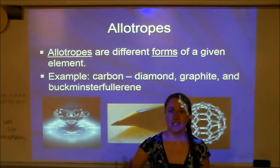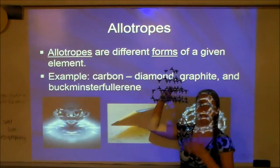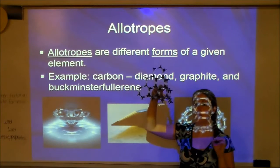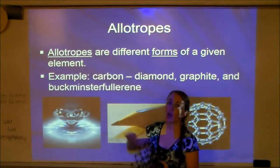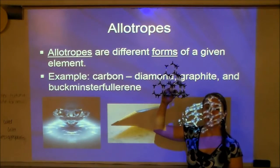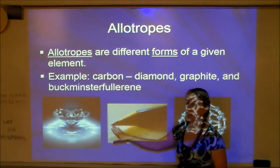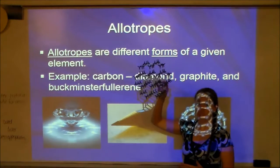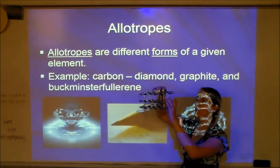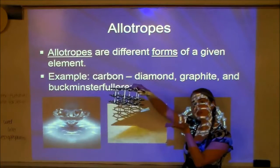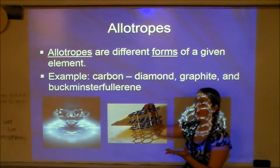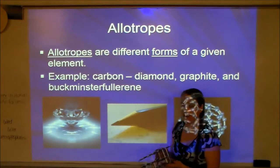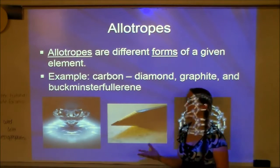All three forms — diamond, graphite, and buckyball — are made only of carbon. Diamond has what we call a tetrahedral structure and is very, very strong, hence why diamonds are some of the hardest substances known to man. Graphite, on the other hand, is not strong at all. It has a honeycomb structure formed in sheets — when you write with your pencil, these sheets break off and leave a trail on your paper. That's why we can write with graphite but not with diamonds.